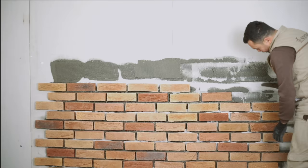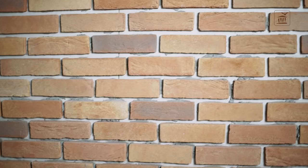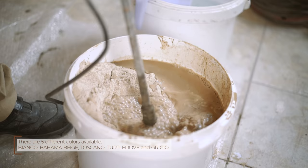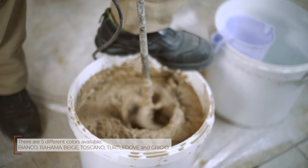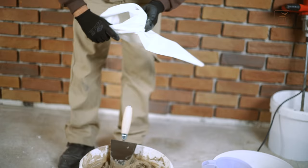A drying time of three to four hours is required after finishing the installation. Once the drying is complete, begin the preparation for the grouting process. Mix each 25 kilogram stone wrap grout bag with four to four and a half liters of clean water until you get a homogeneous mixture.